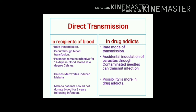Direct transmission is a rare mode seen in malaria. It occurs due to blood transfusion when blood is contaminated with merozoites. Malarial parasites remain infective for 14 days in blood stored at 4 degrees Celsius. This is called transfusion malaria and is merozoite-induced, whereas vector transmission produces sporozoite-induced malaria.